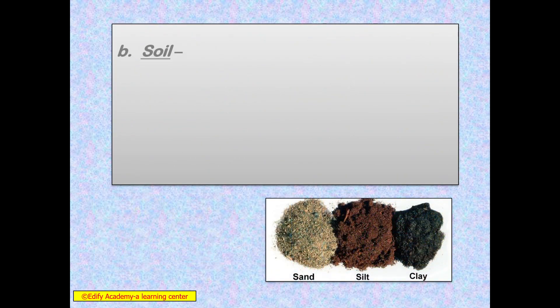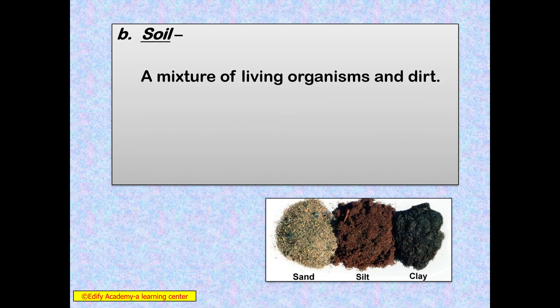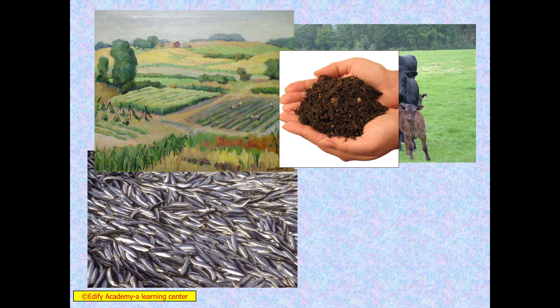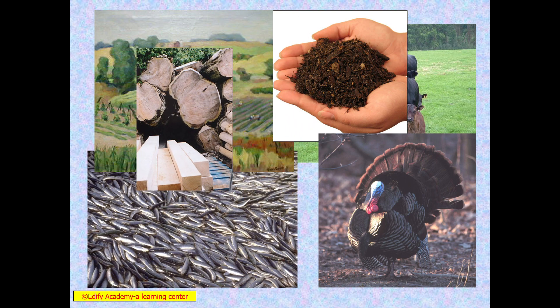Next is soil. This is again a renewable source of energy. A mixture of living organisms and dirt is called soil. Even though it initially takes thousands of years to form, the rate at which soil can regenerate depends on the climate of that area. If the area is hilly, we have rocks; if it is marshy, the soil texture changes. That's why we categorize it as sand, silt, and clay. We can see logs, fishes, animals, and soils in natural habitats.